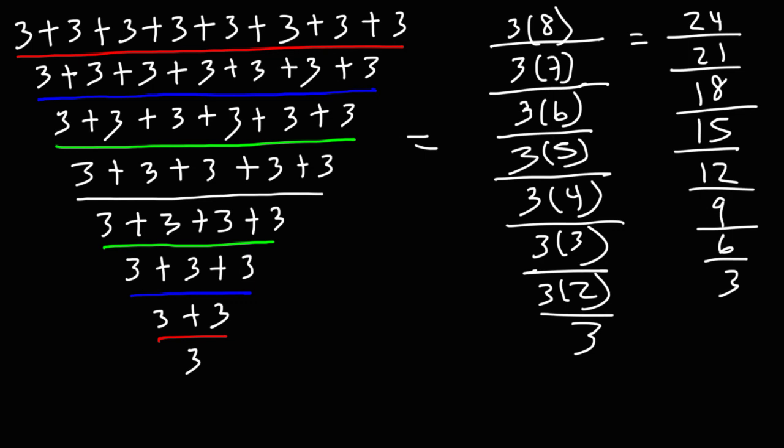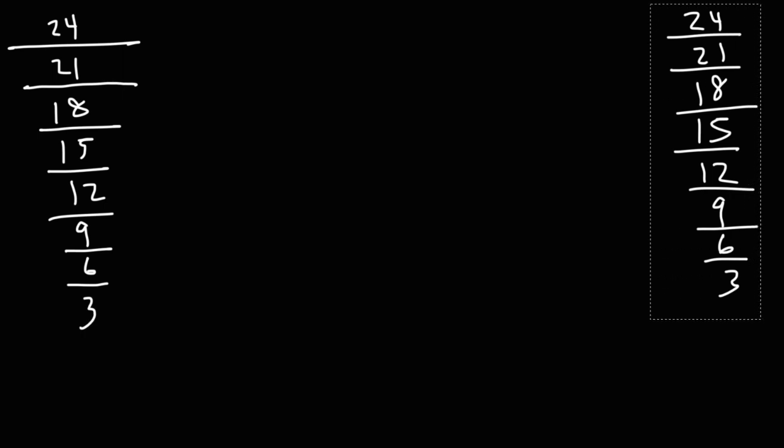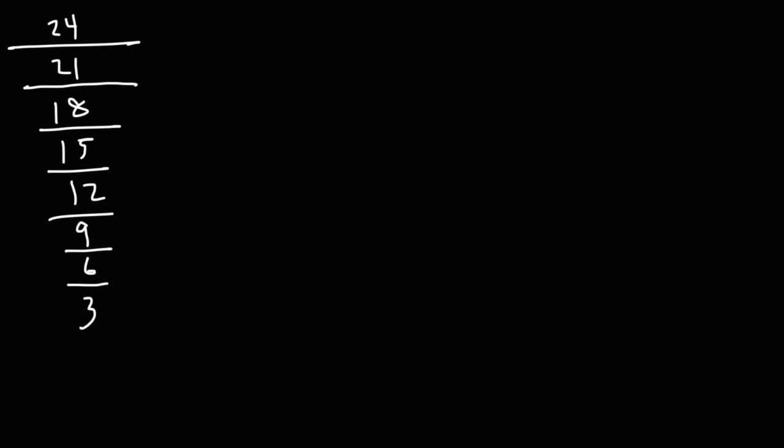So how can we simplify this complex fraction? So I'm just going to rewrite it here. We have 24 divided by 21 divided by 18 divided by 15 divided by 12 divided by 9 divided by 6 divided by 3. What would you do to simplify such a fraction?